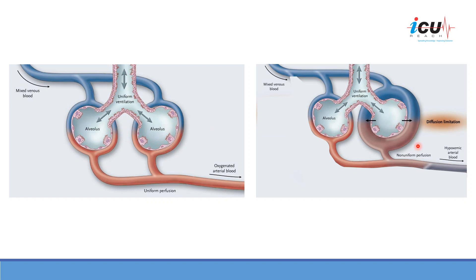On the right side, we see vasodilatation responsible for non-uniform perfusion, as opposed to normal or uniform ventilation. So the ventilation-to-perfusion ratio is decreased as a result of the increased perfusion.